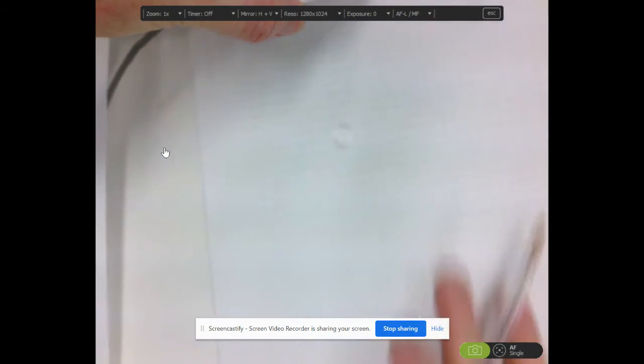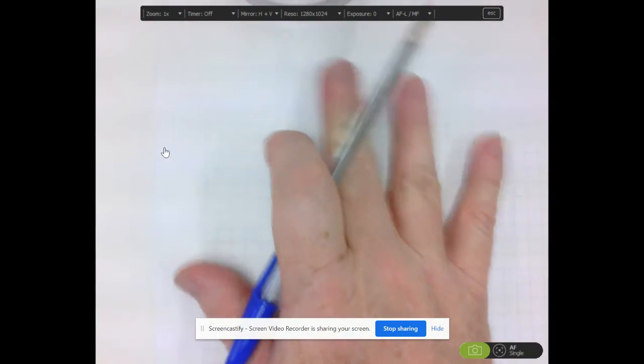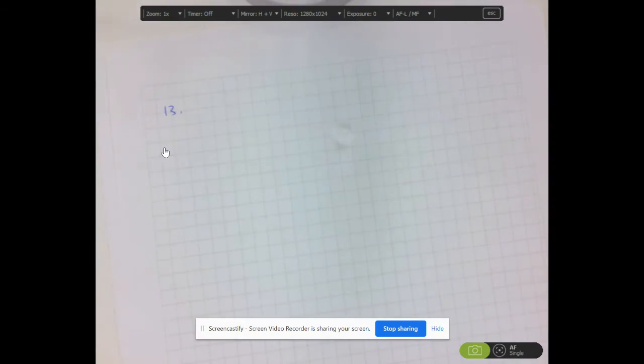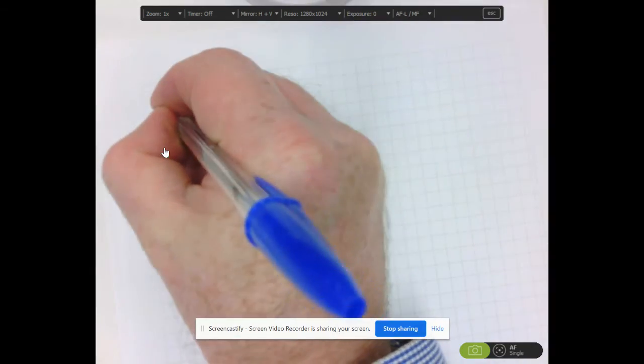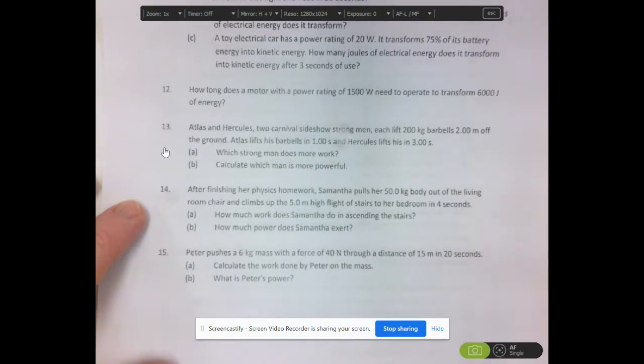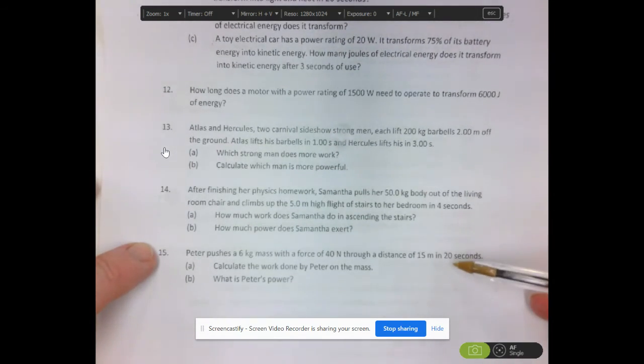Going to question 13 now. Right, yeah, that's the right orientation. 13. Oh, sorry, it's 14. 13 was Atlas. 14. After finishing her physics homework, Samantha pulls her 50 kilogram body out of the living room chair and climbs up the five metre flight of stairs to her bedroom and she does it in four seconds.